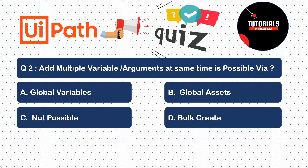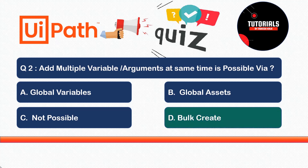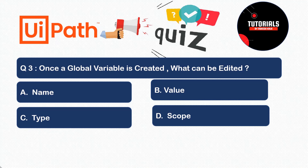Question two: I have to add multiple variables and arguments at the same time - how is this possible? Is it (a) using global variables, (b) using global assets, (c) it is not possible at all, or (d) using Bulk Create? The correct answer is Bulk Create - an option available for both arguments and variables that allows you to create multiple variables or arguments in a single window, which was not possible earlier.